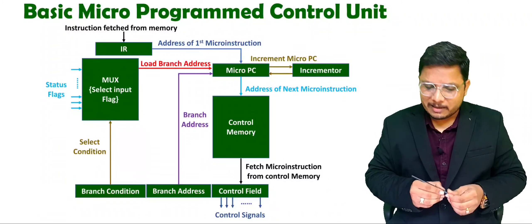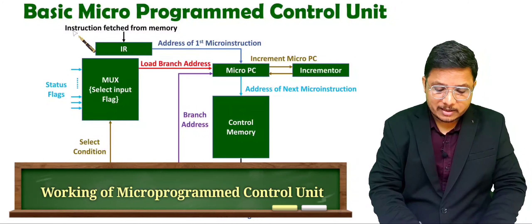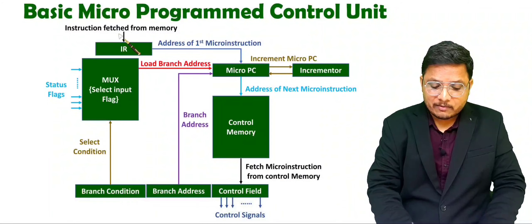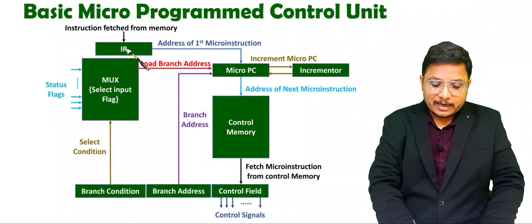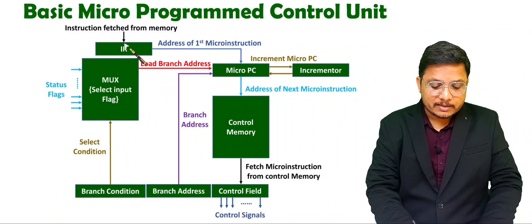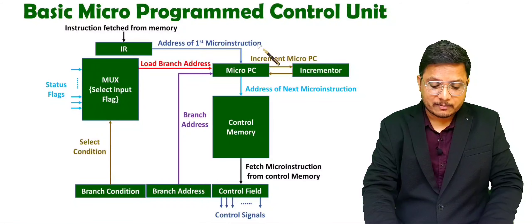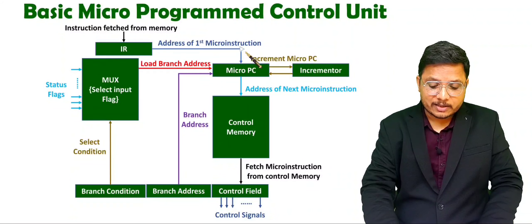Let us try to understand that. As I have told you, the instruction fetched from memory will go inside the IR register. Inside IR, it will be performing an instruction decode operation. And that will be generating the address of the first micro-instruction. That address of the first micro-instruction will be given to the micro-PC.